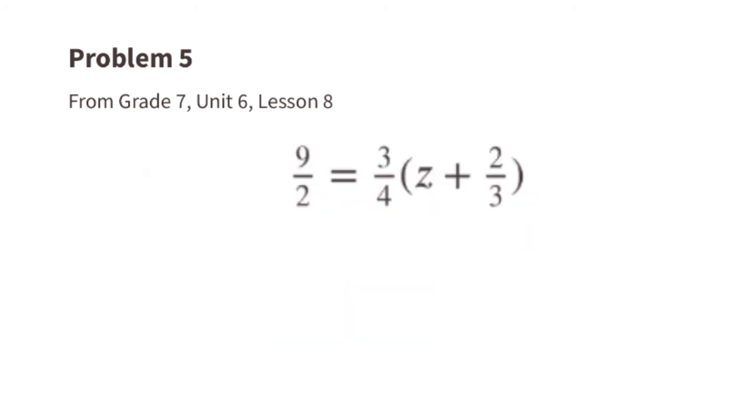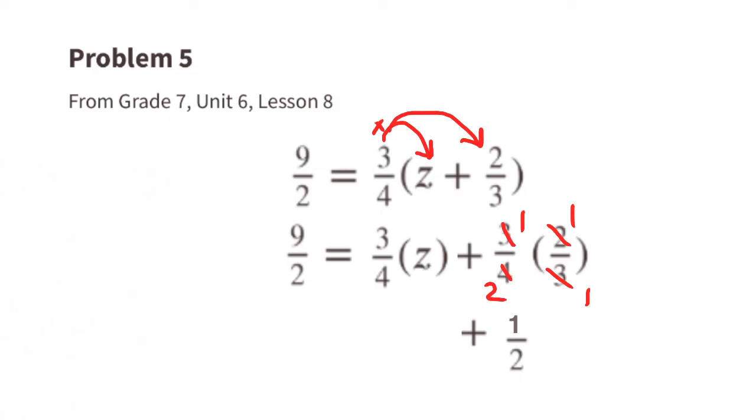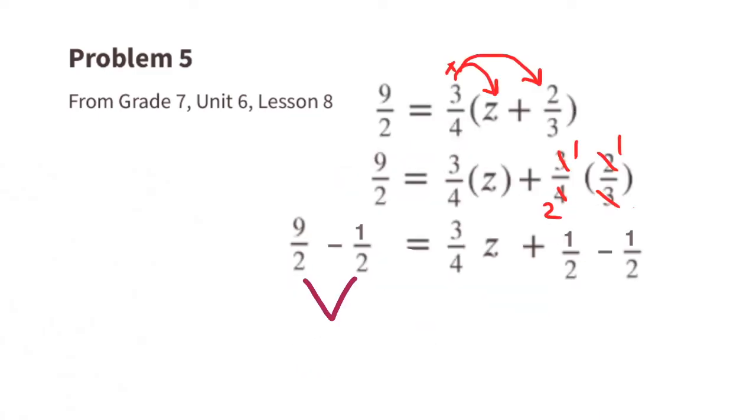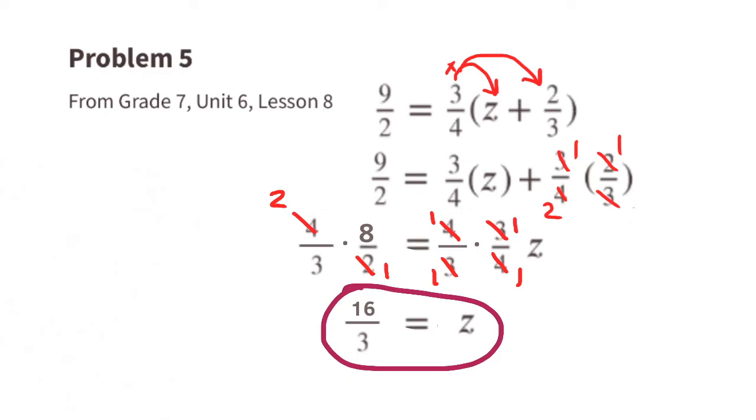Multiply the terms inside the parentheses by 3/4, 3/4 times Z plus 3/4 times 2/3, 3/4 times 2/3. We can cross cancel, and that's worth 1/2, so we can rewrite this as 9/2 equals 3/4 Z plus 1/2. To get the Z by itself, we need to subtract 1/2 from both sides of the equal sign. 9/2 minus 1/2 equals 8/2. 1/2 minus 1/2 equals 0, so this can be rewritten as 8/2 equals 3/4 Z. To make that 1Z, we need to multiply both sides by the reciprocal of 3/4, which is 4/3. When you multiply a number by its reciprocal, the answer is always 1. So here, on the right-hand side, we end up with 1Z, or Z, and on the left-hand side, we end up with 16/3. So Z equals 16/3.